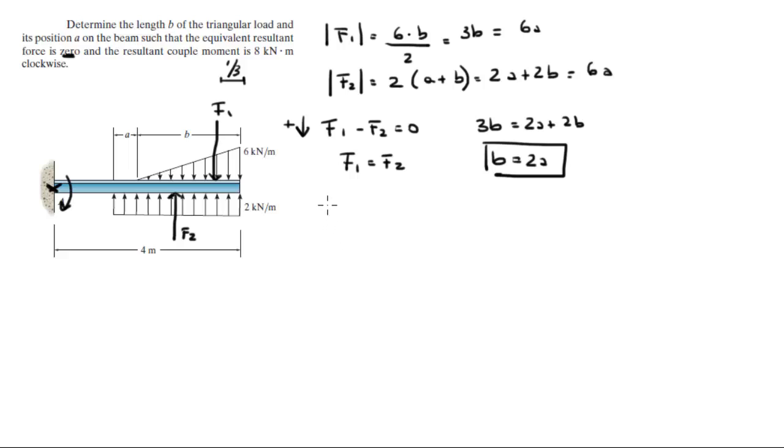So now you know that the moments, the moment about A, has to be equal to 8 going clockwise, so let's assume clockwise is positive, so it has to be equal to 8.